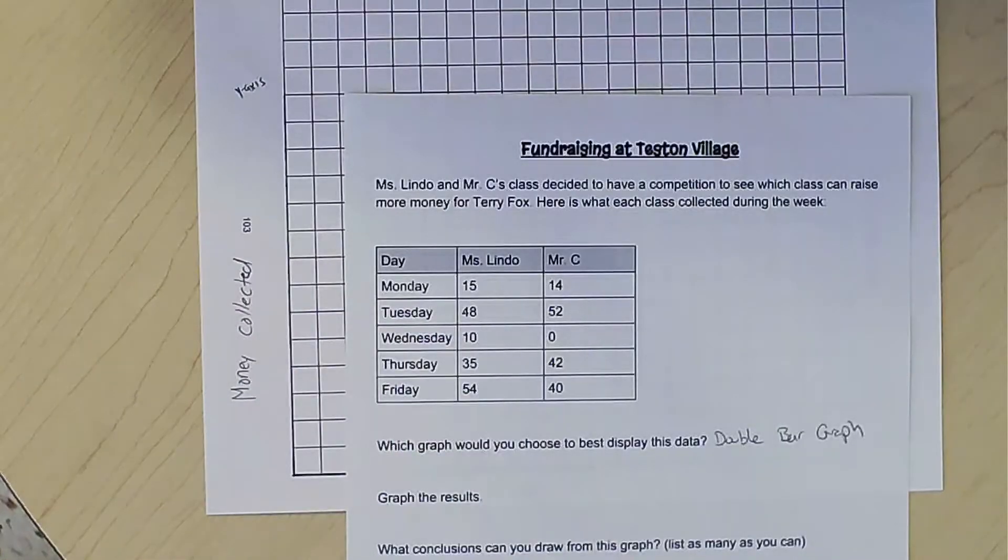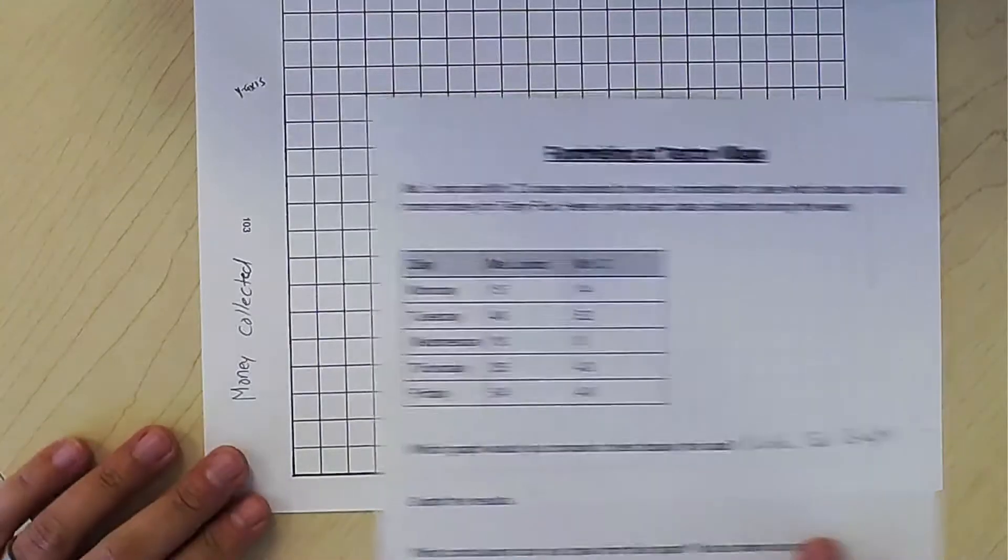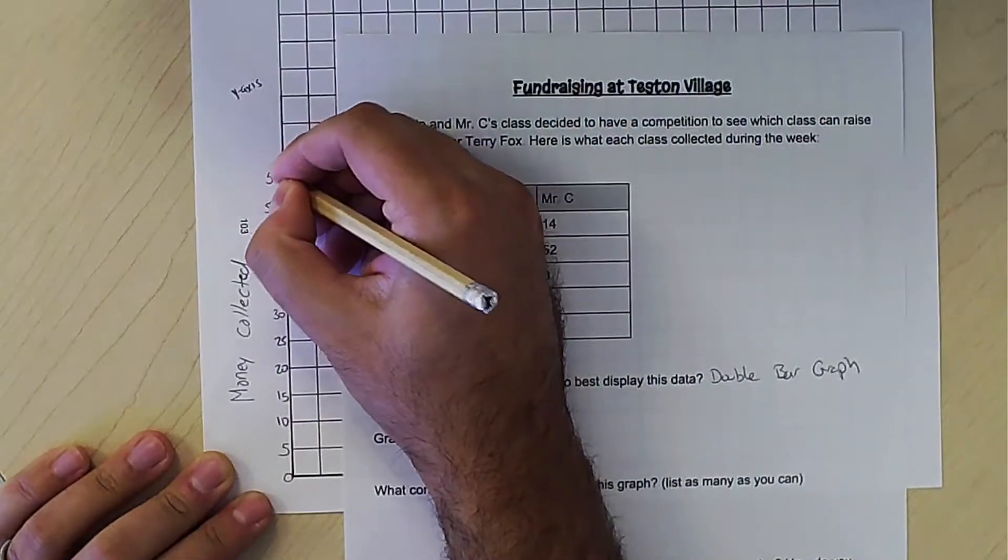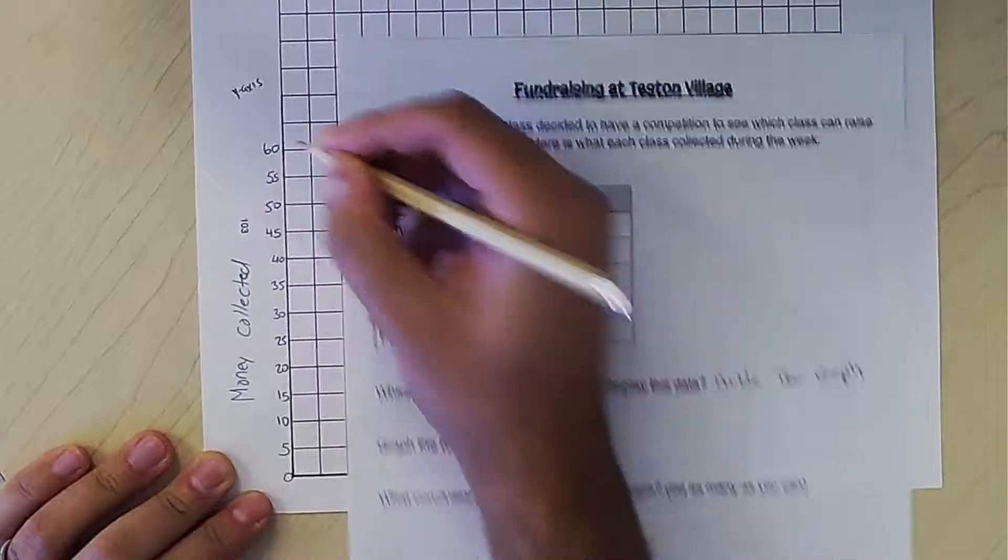What should our scale be? Scale is what you skip count. Fives is a good one. Where should I stop? I'm going to stop at 60. Okay, I'll stop at 60. Okay, good.